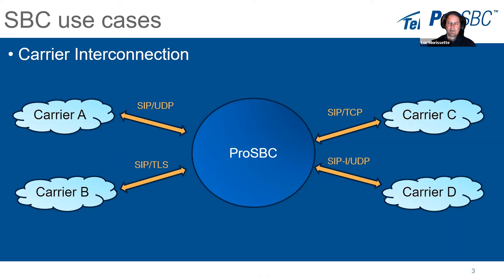One SBC use case is carrier interconnection — connecting various carriers together, each with different SIP protocols. For example, a SIP trunk using UDP, one using TCP, another using TLS and SRTP, and one using SIPI. All of these are mixed together in the SBC, and you can route calls from one network to another, with load sharing and priority routing.